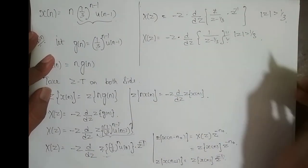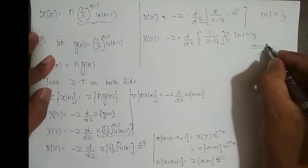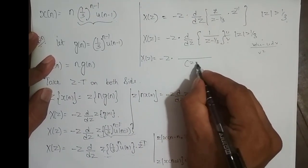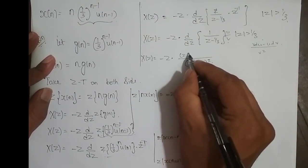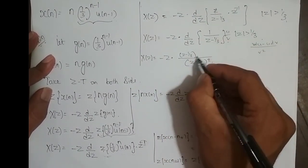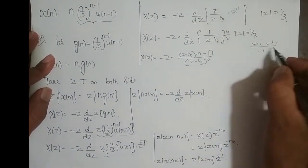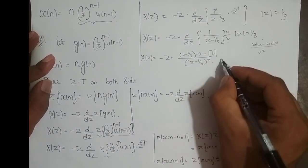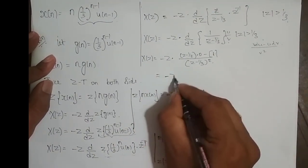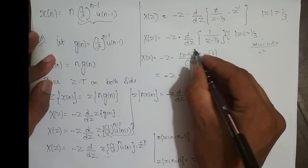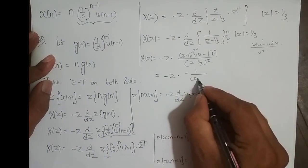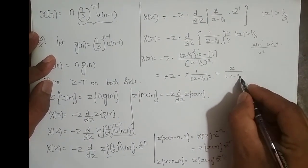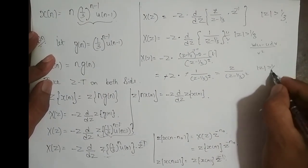This is of the form u by v, so the derivative is v squared in the denominator, v times differentiation of u minus u times differentiation of v. So X of z equals minus z into: denominator is z minus 1 by 3 whole square; numerator is z minus 1 by 3 times 0 minus 1 times 1, which is negative 1. So X of z equals minus z into negative 1 divided by z minus 1 by 3 whole square. The negatives cancel, giving X of z equal to z divided by z minus 1 by 3 whole square, with ROC magnitude of z greater than 1 by 3.